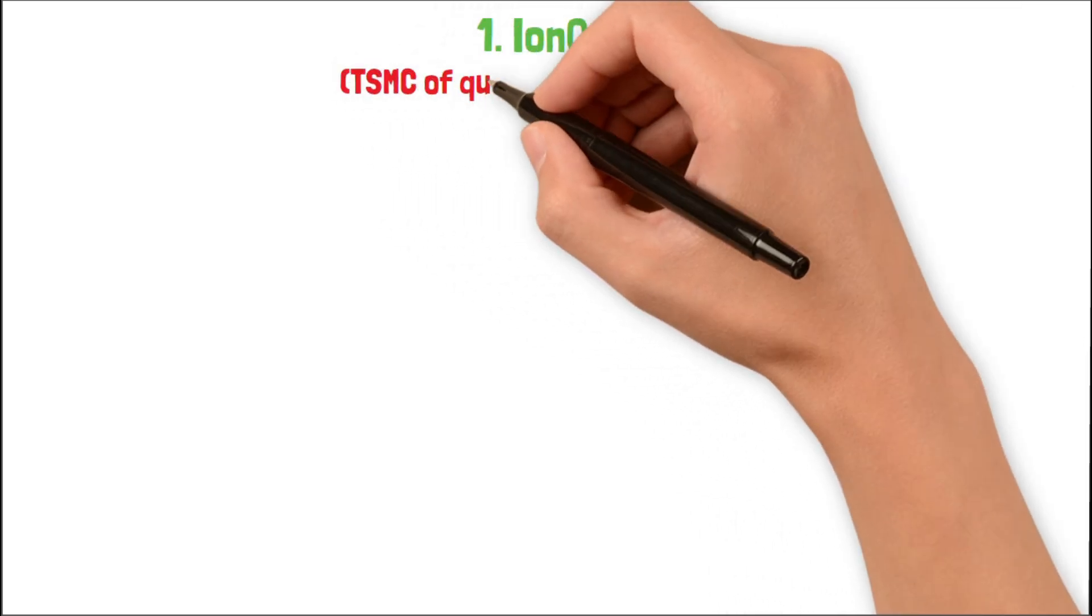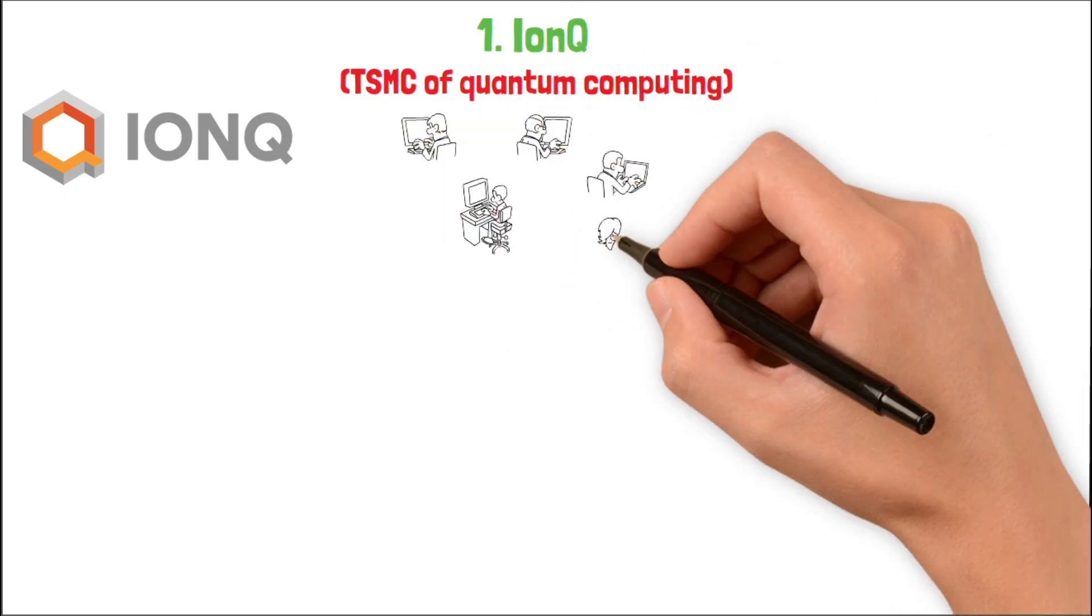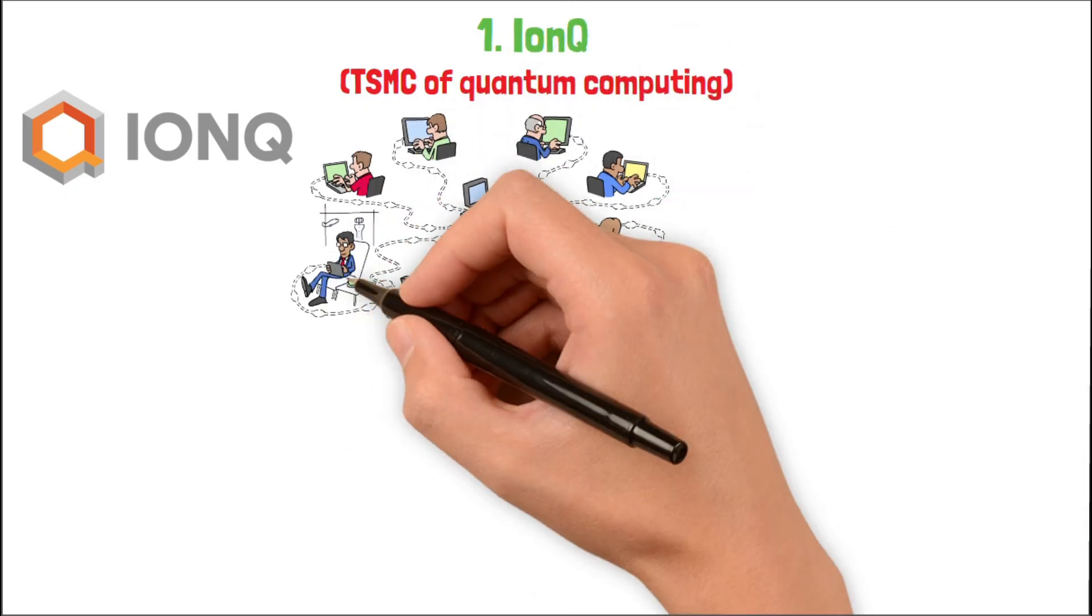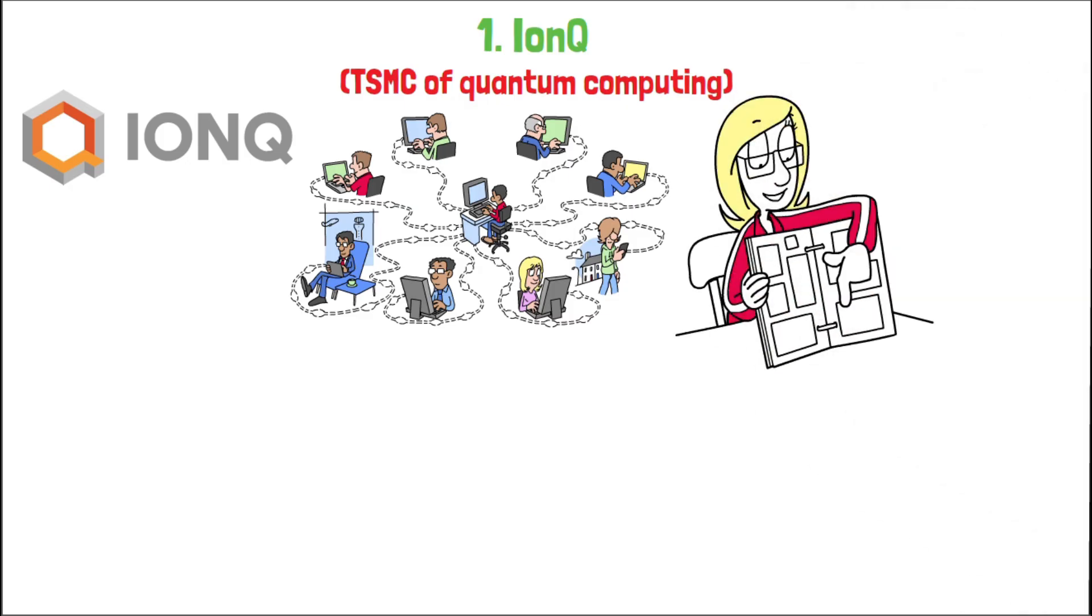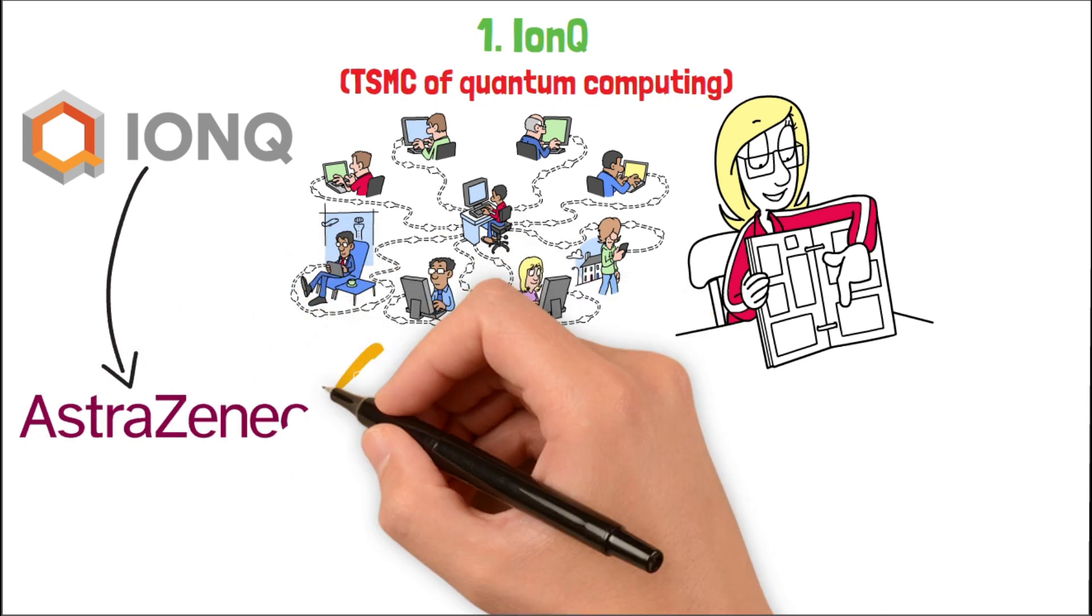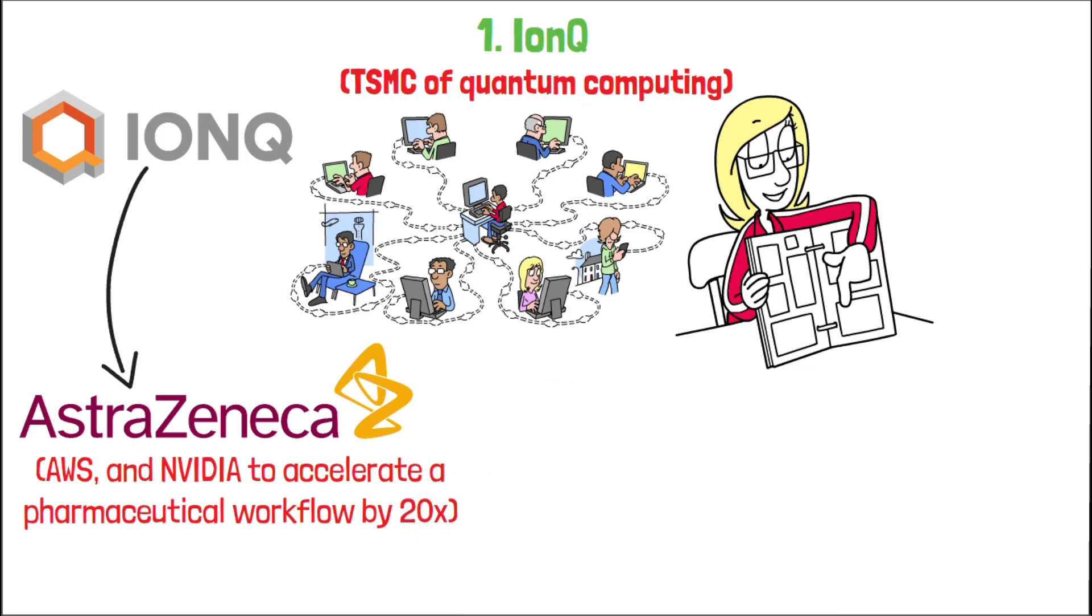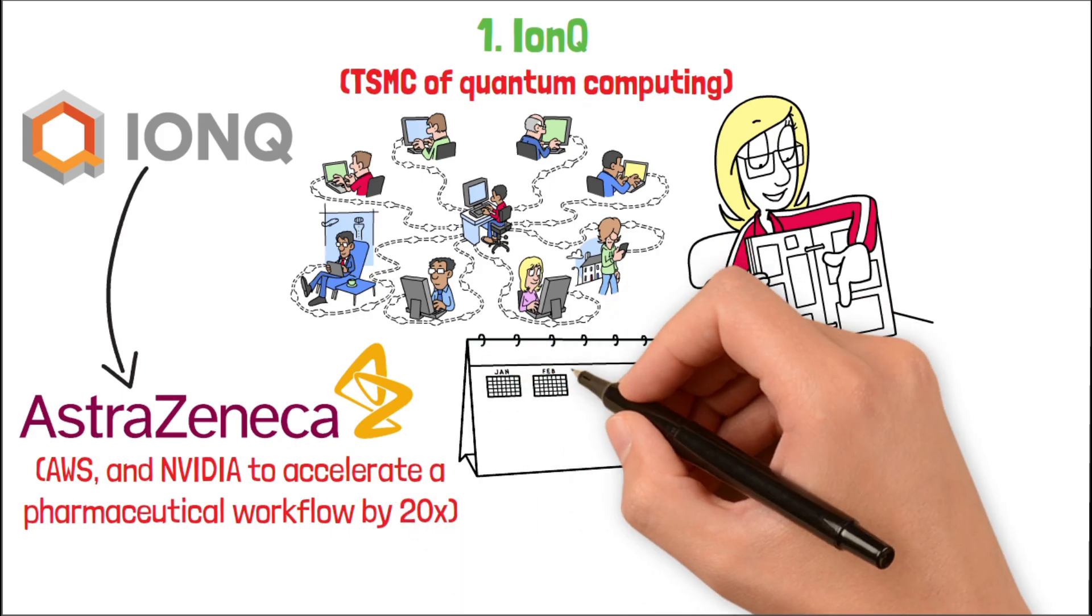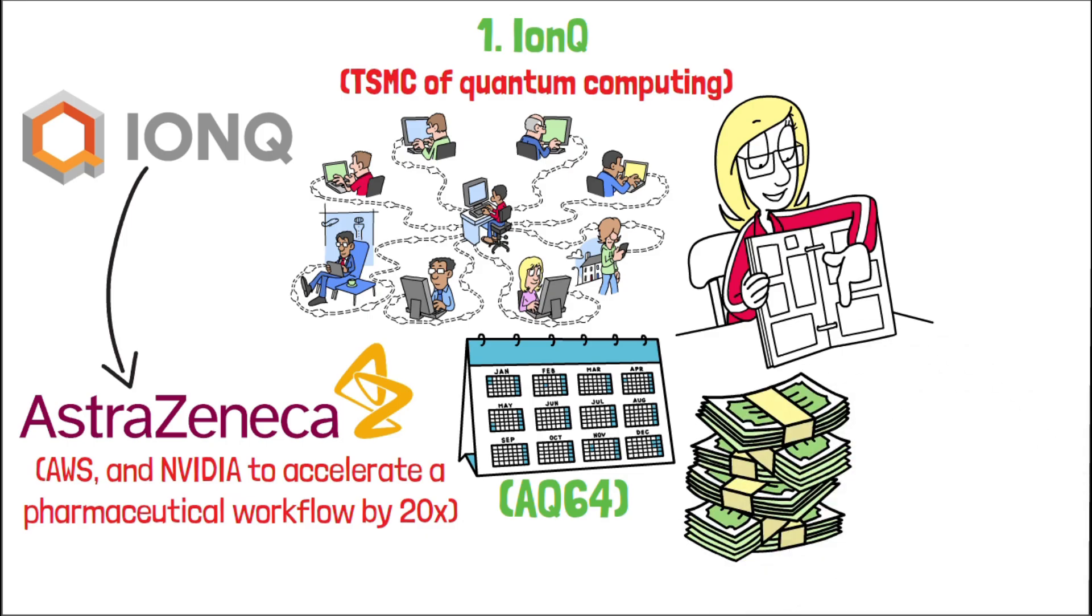First up, IonQ, what I call the TSMC of quantum computing. They've built a system using trapped ion qubits, which are incredibly stable, highly connected, and produce fewer errors than most other approaches. That's not just theoretical, it's showing up in real results. In June 2025, they worked with AstraZeneca, AWS, and NVIDIA to accelerate a pharmaceutical workflow by 20 times. Not a demo. A real commercial use case. And in September, their Tempo system hit AQ64, currently the highest benchmark in the industry. With Q2 revenue hitting $20.7 million and guidance of up to $100 million for the year, IonQ isn't just promising. They're delivering.